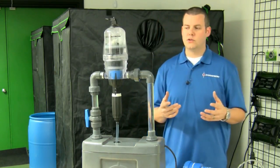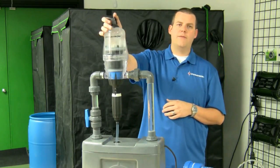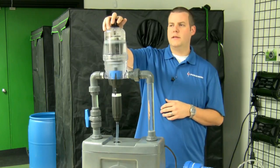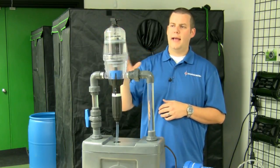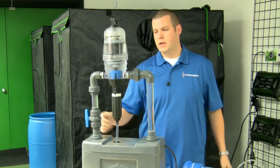We also have something in the Dosatron line that allows us more flexibility and that is the ability to have what we call a bypass. When this bypass is turned on, it stops the piston from moving up and down which therefore stops the unit from injecting.